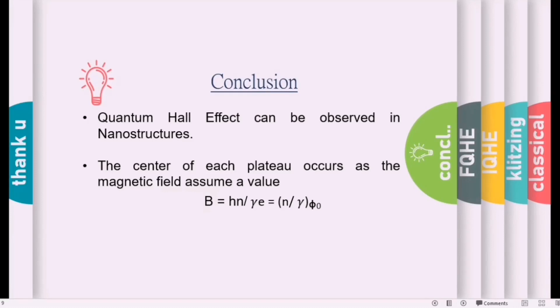So quantum Hall effect can be observed especially in nanostructures, these two-dimensional or one-dimensional structures. And the resistivity as a function of magnetic field is not a straight line, but in classical Hall effect that will be a linear straight line. For Hall resistance we have seen that there are certain plateaus, and for longitudinal resistance it is zero most of the time but it shows a peak as the Hall resistivity makes a transition from one plateau to another. And one more point to be noted is that the center of each plateau occurs as the magnetic field assumes a value, that is B equals hn divided by γe, where Φ₀ is h/e, known as the flux quantum.